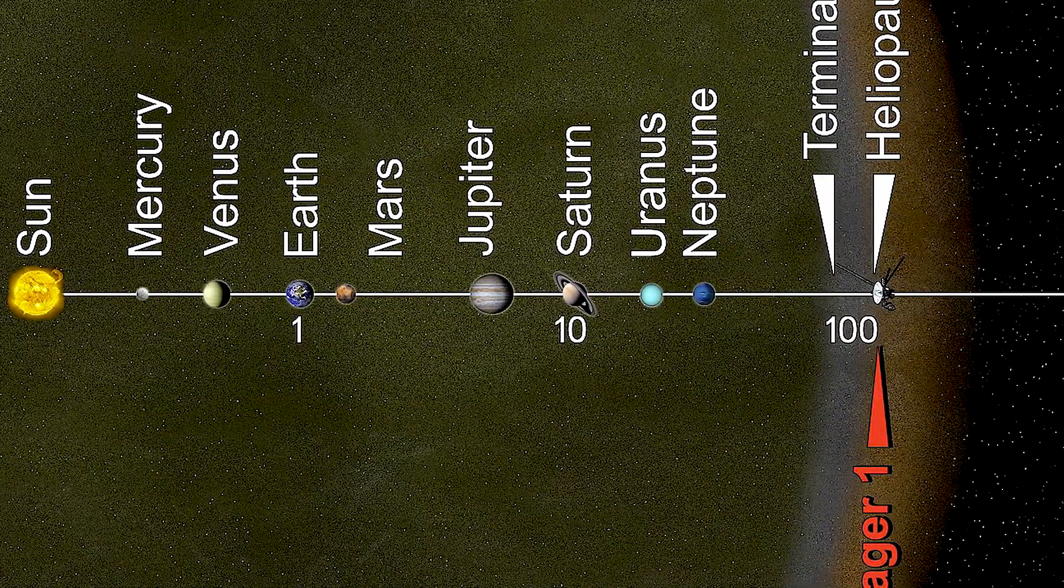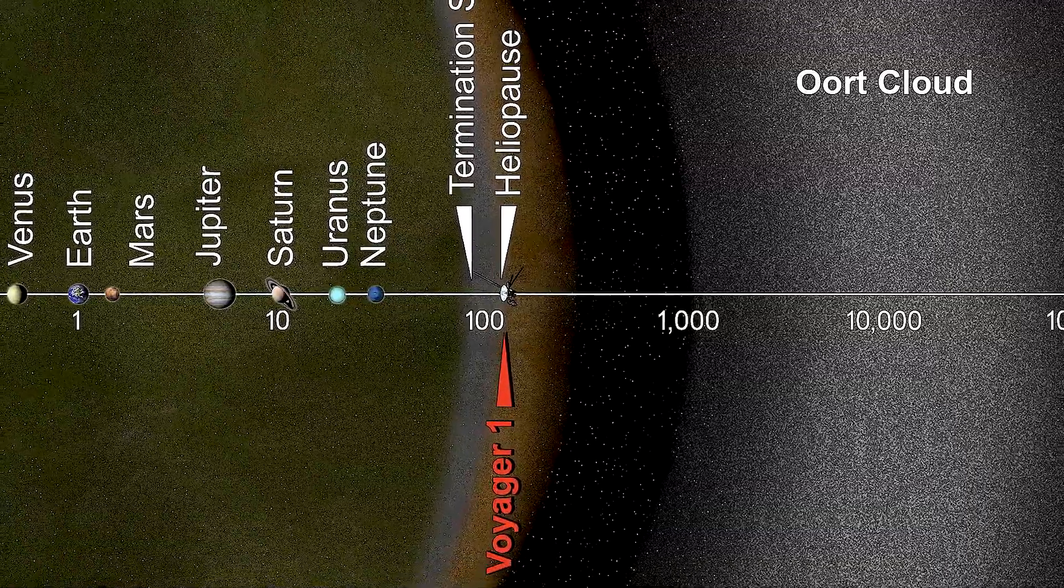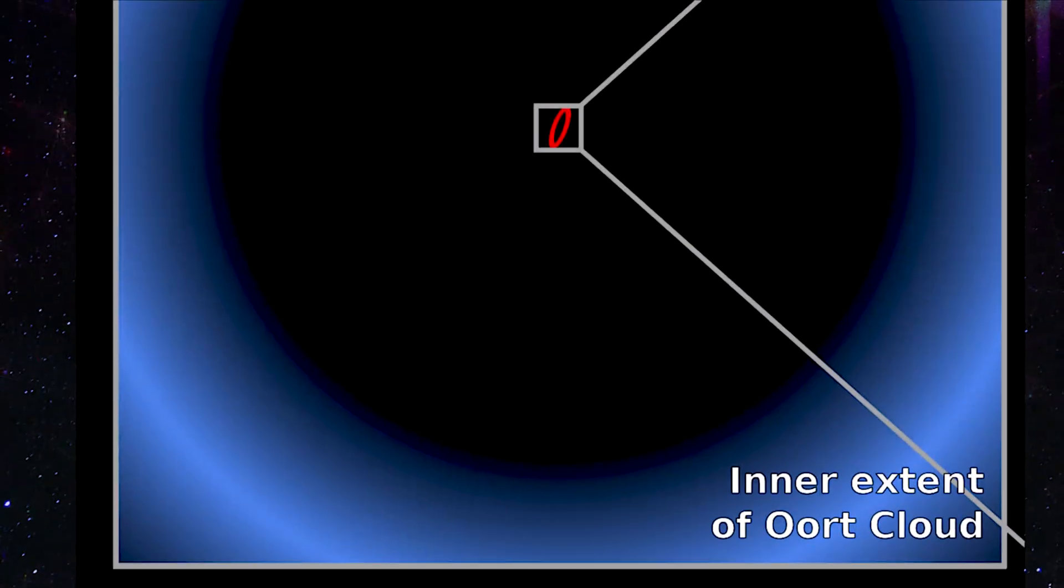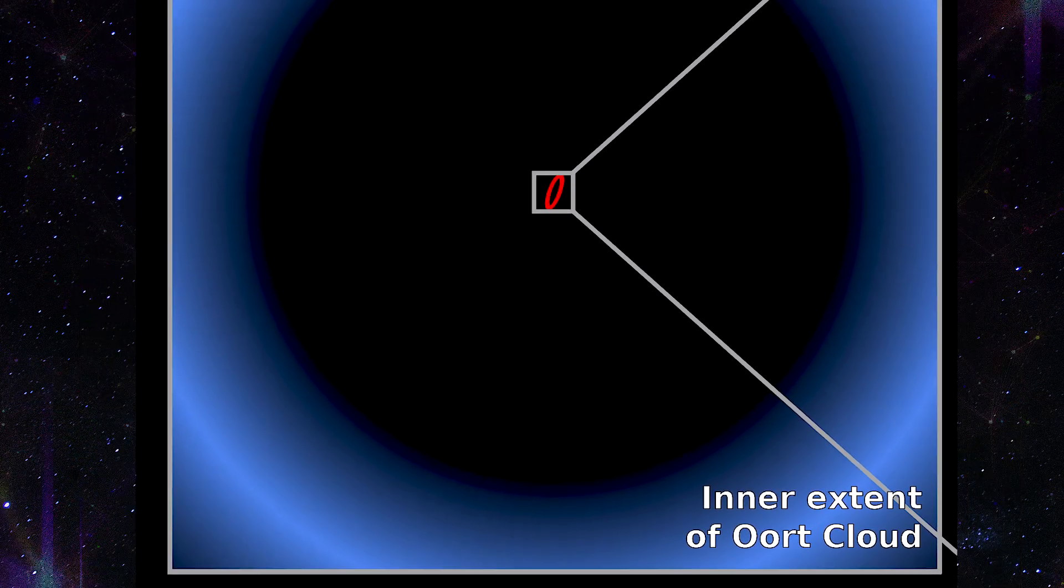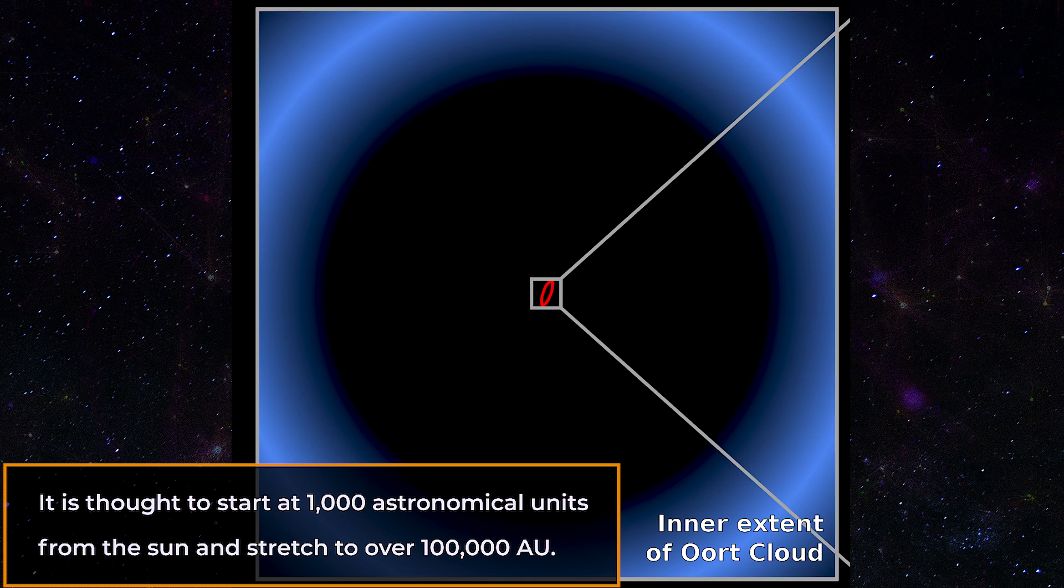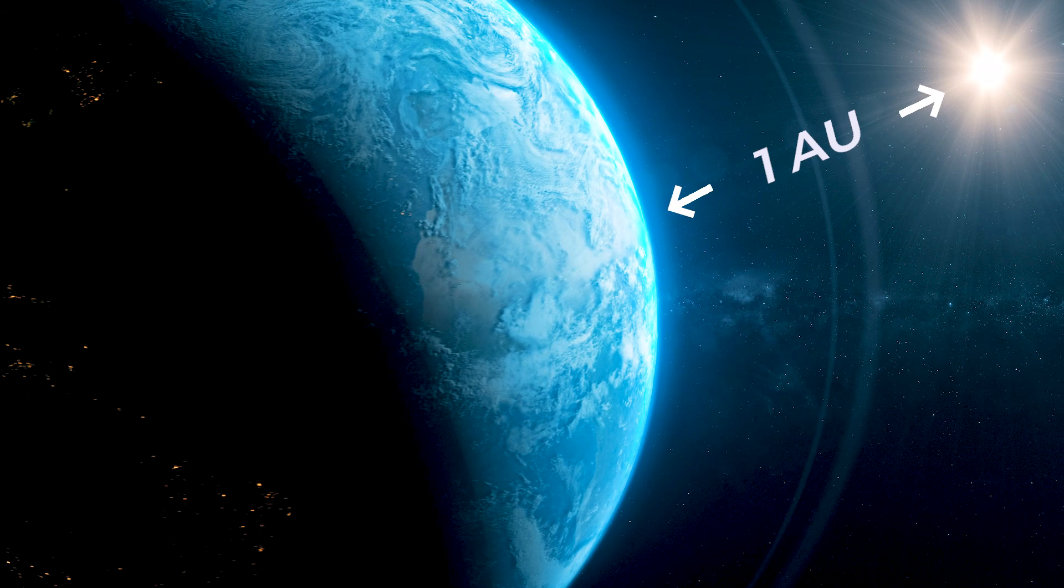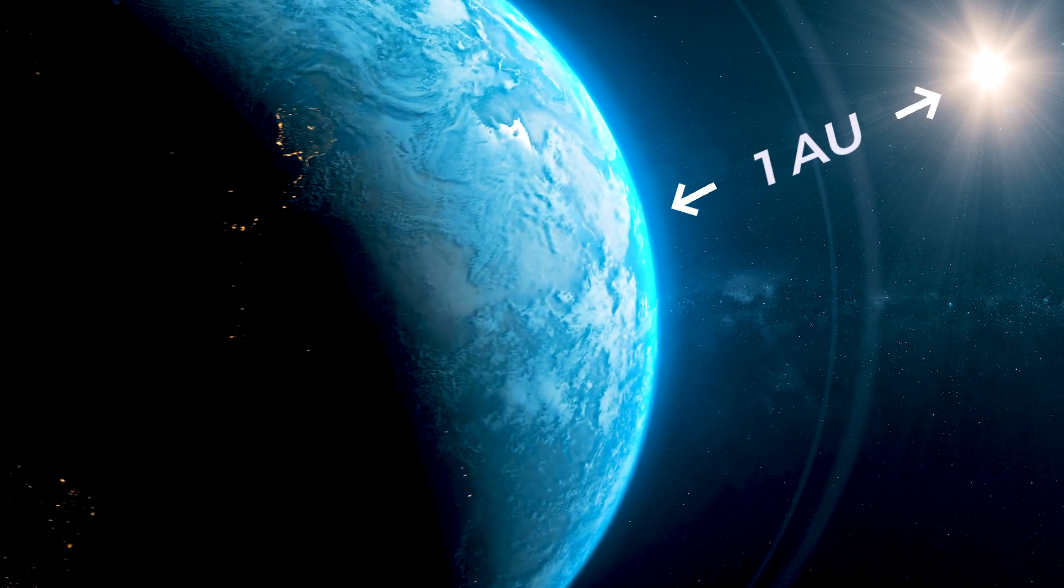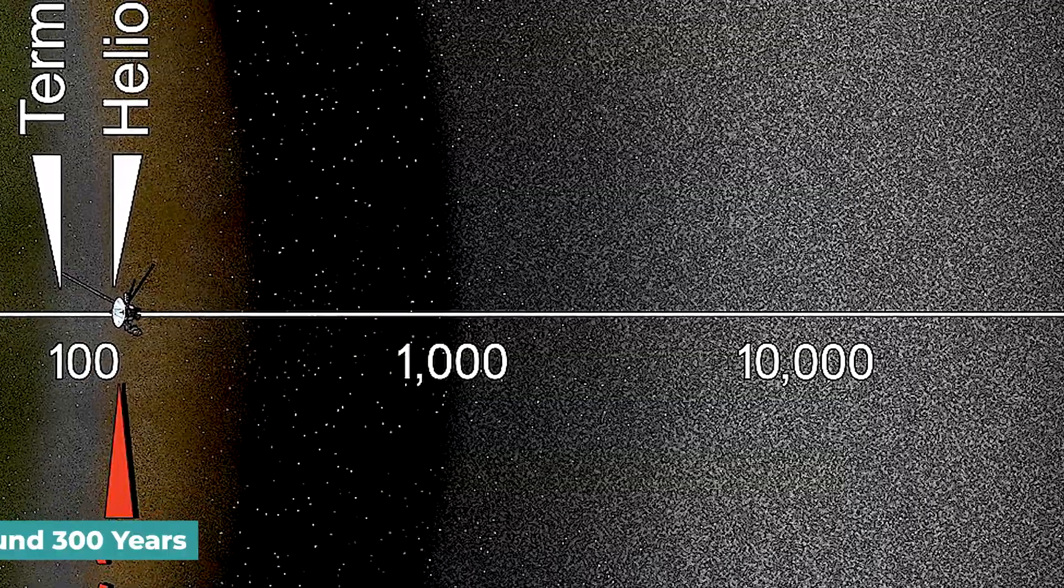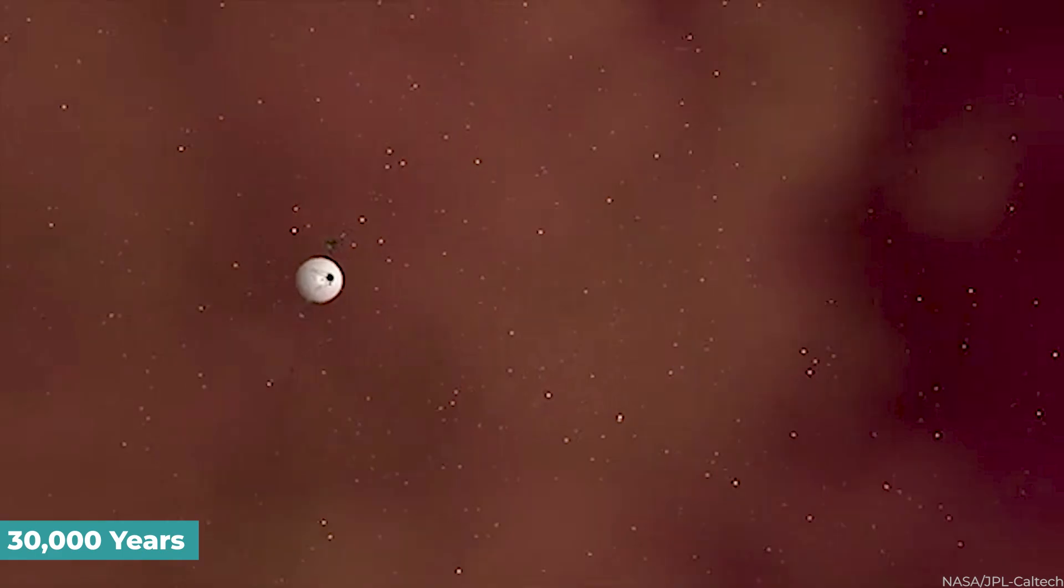The solar system's limit is thought to lie beyond the outer edge of the Oort cloud, a collection of tiny objects that are still subject to the Sun's gravity. The extent of the Oort cloud is unknown, although it is thought to start at 1,000 astronomical units from the Sun and stretch to over 100,000 AU. For comparison, 1 AU is the distance from the Sun to Earth. Voyager 2 will take around 300 years to reach the inner edge of the Oort cloud and 30,000 years to travel past it.